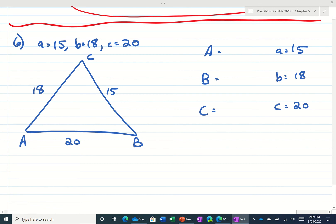And what we always want to do is we always want to find the largest angle first, which would be angle C. So the way that we do that is we find the cosine of angle C is equal to A squared plus B squared minus C squared over 2AB.